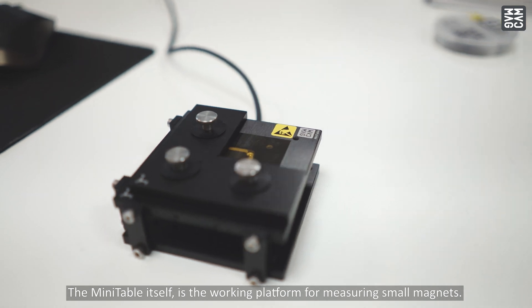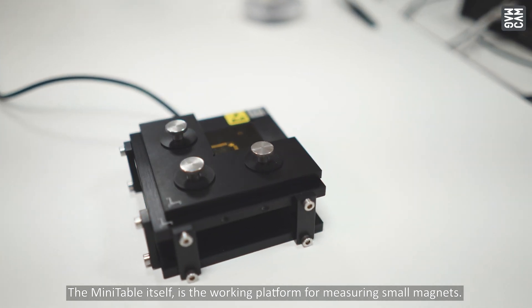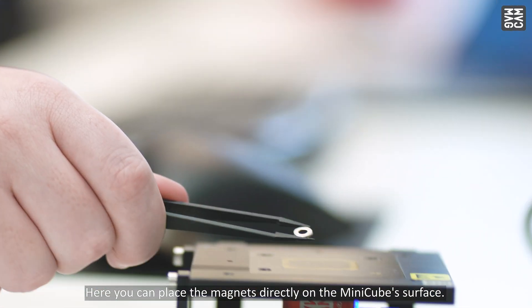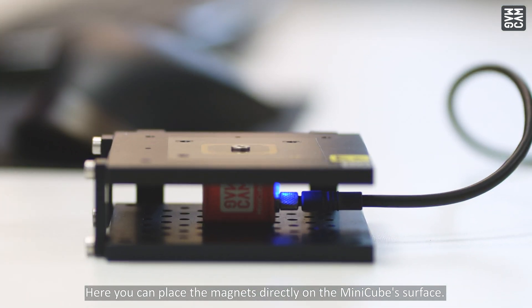The mini table itself is a working platform for measuring small magnets. Here you can place the magnet directly on the miniCube surface.